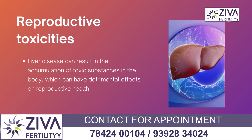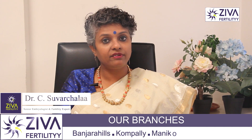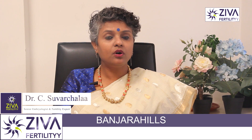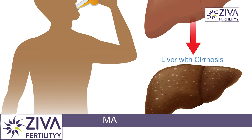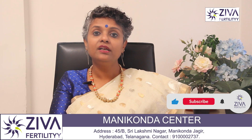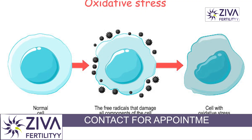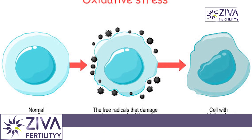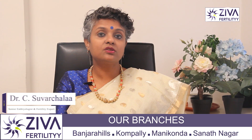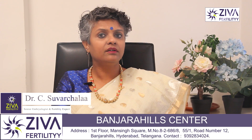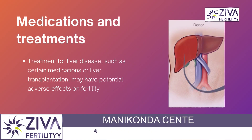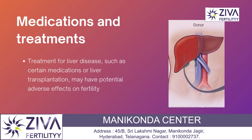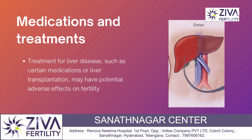Reproductive toxicities: liver disease can result in the accumulation of toxic substances in the body, which can have detrimental effects on reproductive health. In conditions such as alcoholic liver disease or viral hepatitis, the liver may not be able to effectively detoxify harmful substances, leading to increased oxidative stress and damage to reproductive organs such as the ovaries or testes. This can affect fertility and reproductive outcomes.